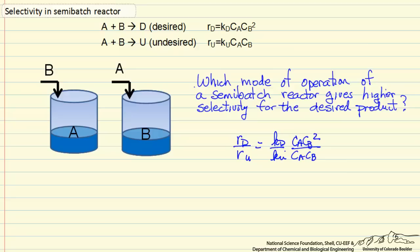This ratio does depend on the concentration of A, but it's proportional to the concentration of B, so this says we want the concentration of B to be as high as possible to get the highest selectivity.